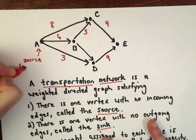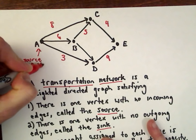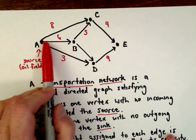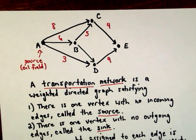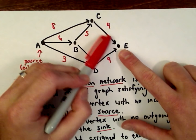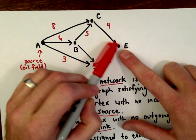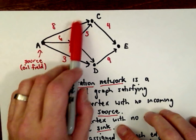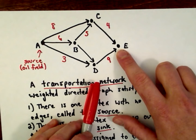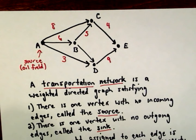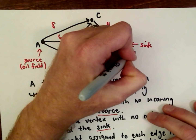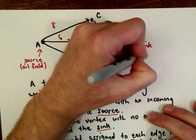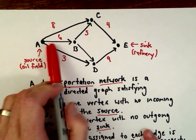You could think about vertex a as being like the oil field — that's where we're getting all the oil from. Once we've got the oil, we start shipping it through pipelines to different places, and eventually we want to get it to the refinery. The refinery is going to be our vertex e. Notice vertex e only has arcs coming into it; it doesn't have any arcs going out. That's what's known as the sink.